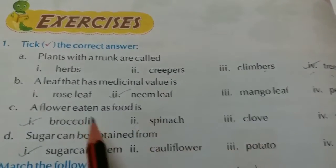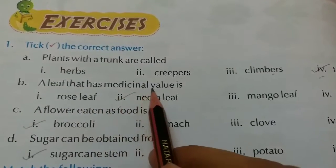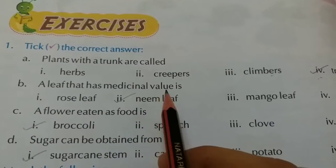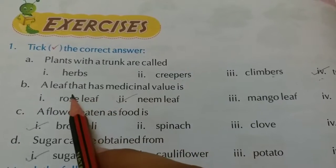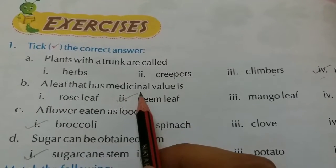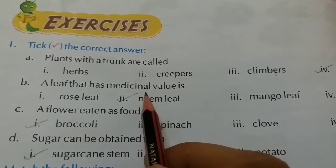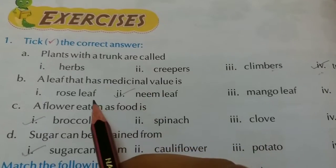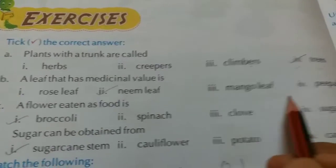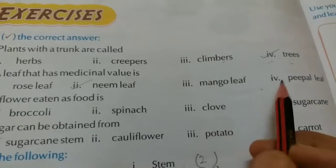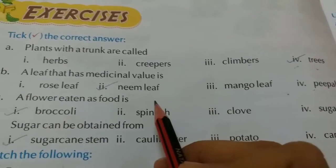The correct option is tree. The second question is — a leaf that has medicinal value is dash. Options are rose leaf, neem leaf, mango leaf, and pepper leaf. The answer is neem leaf.